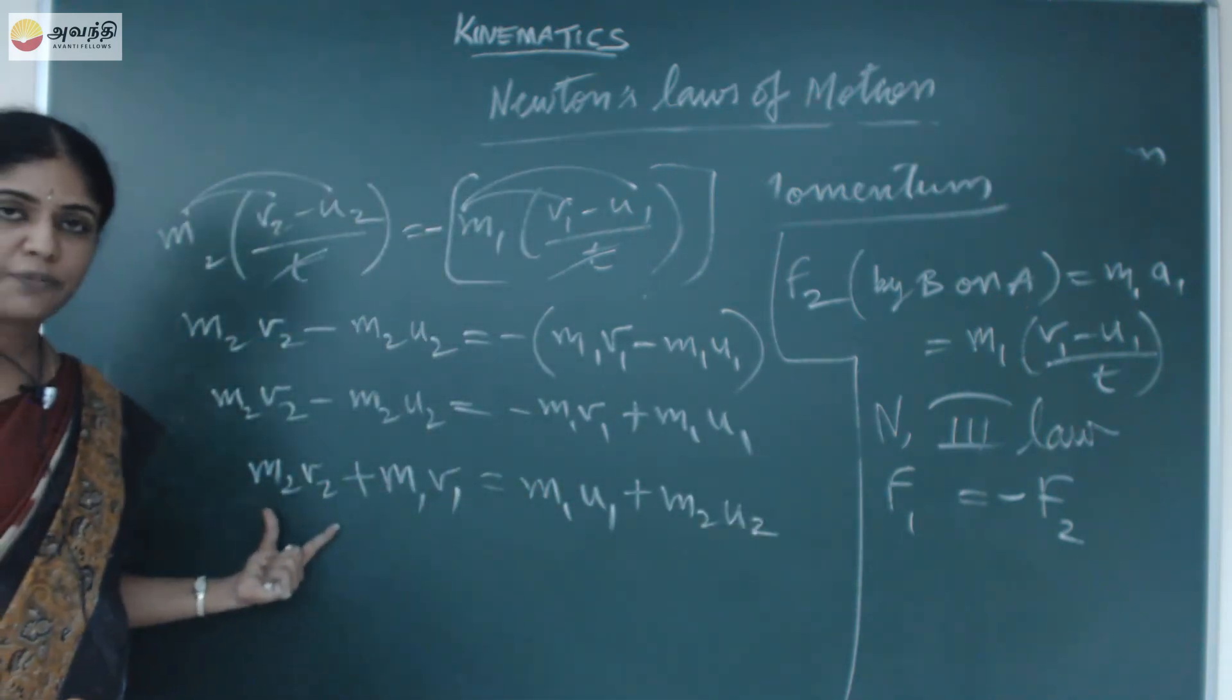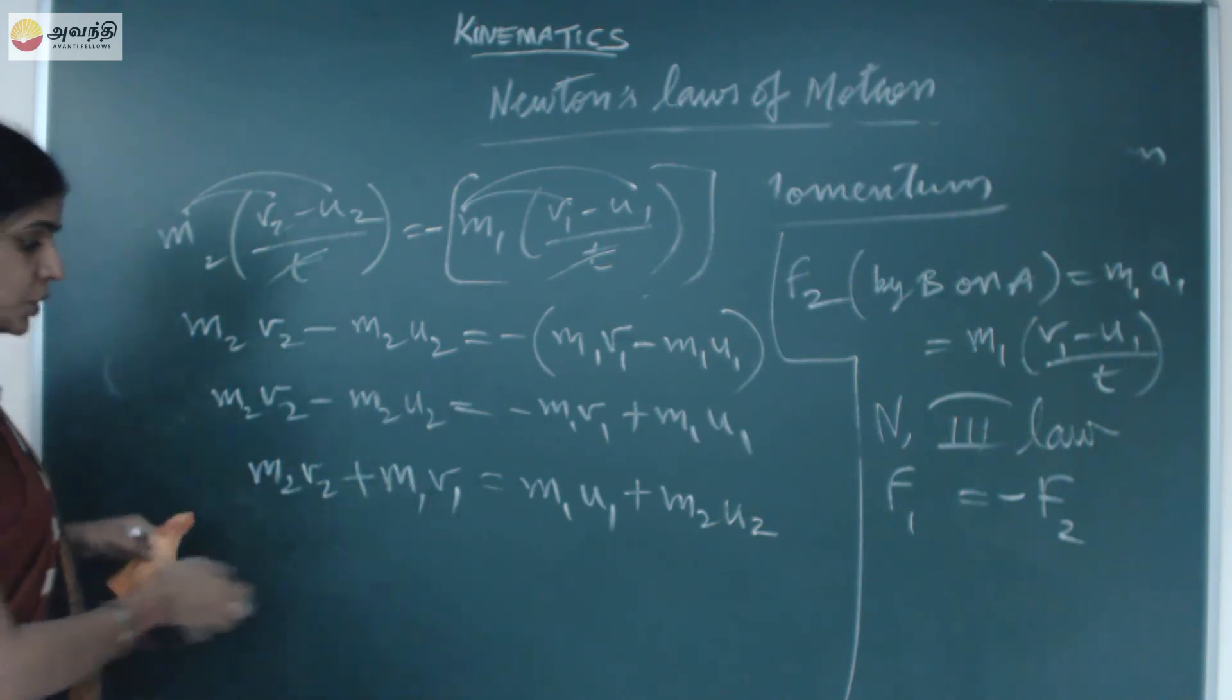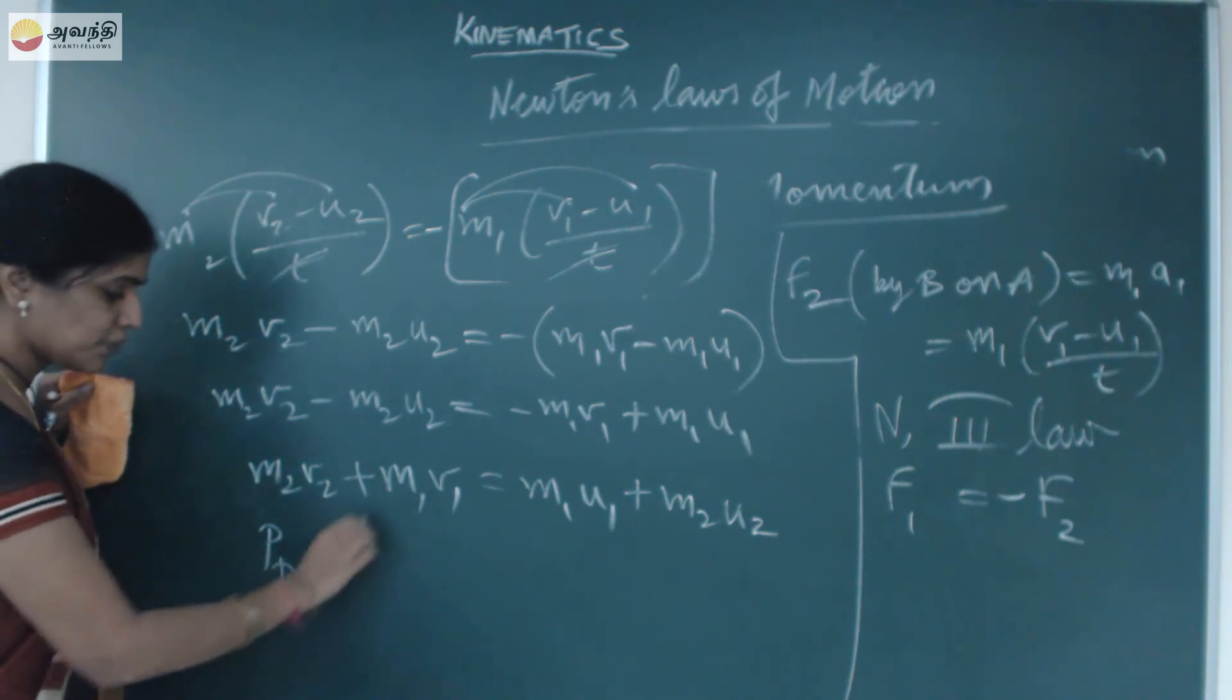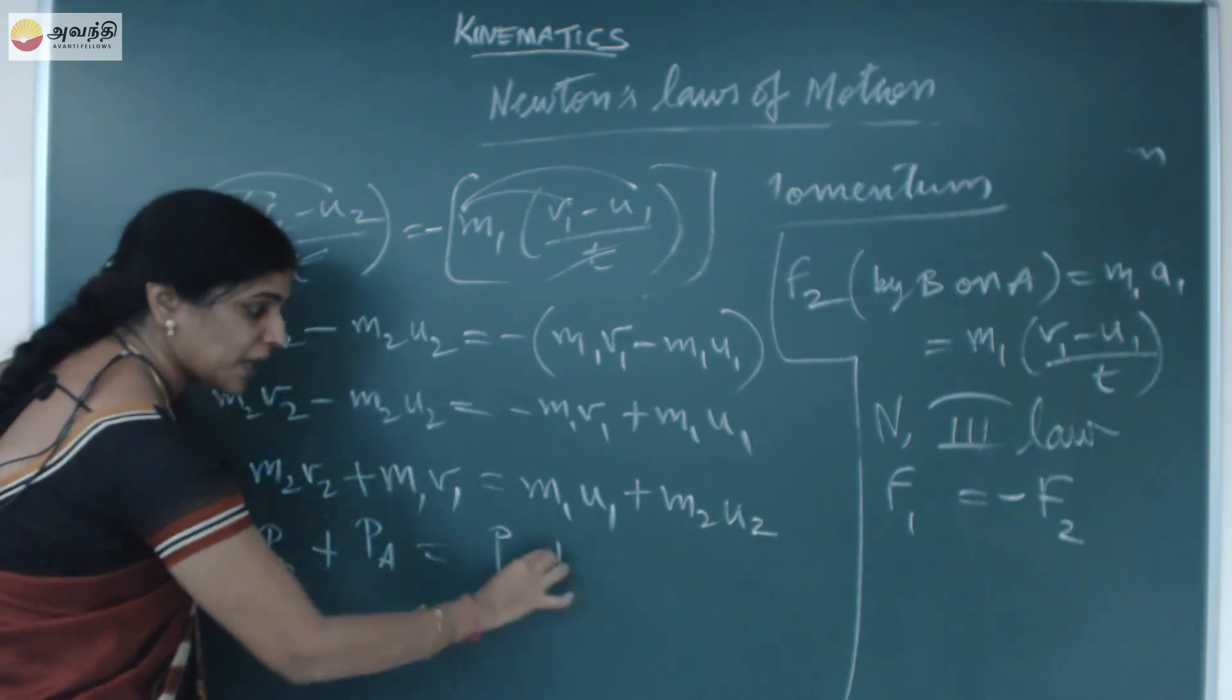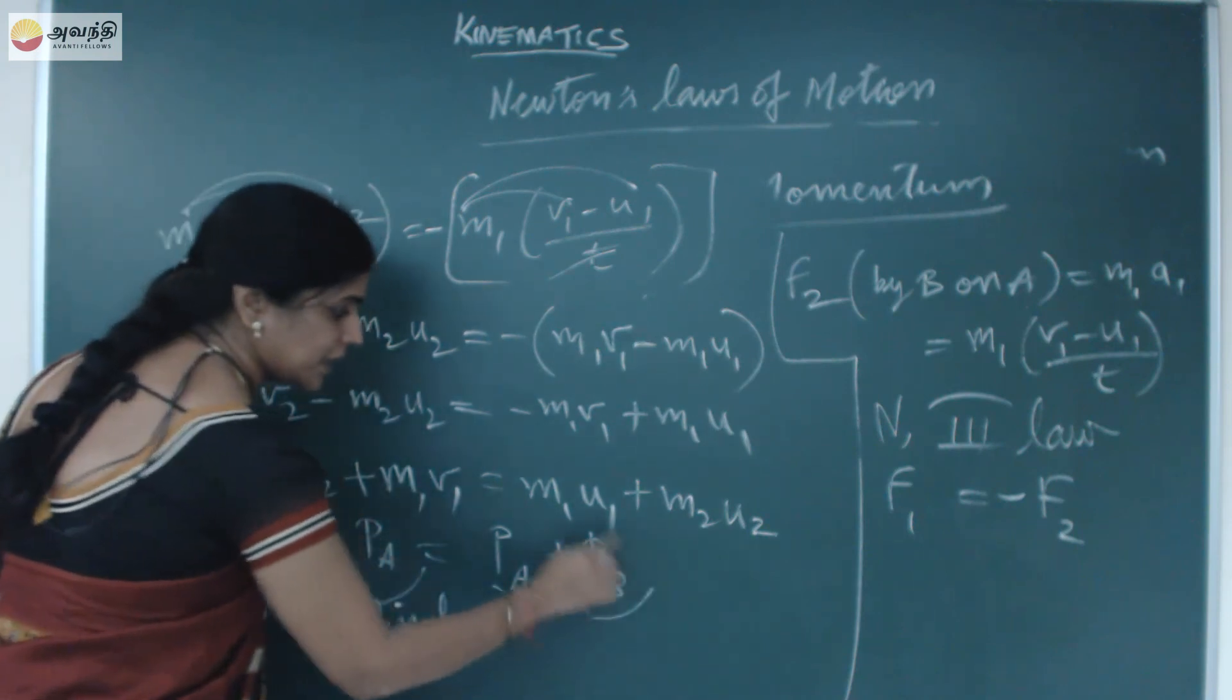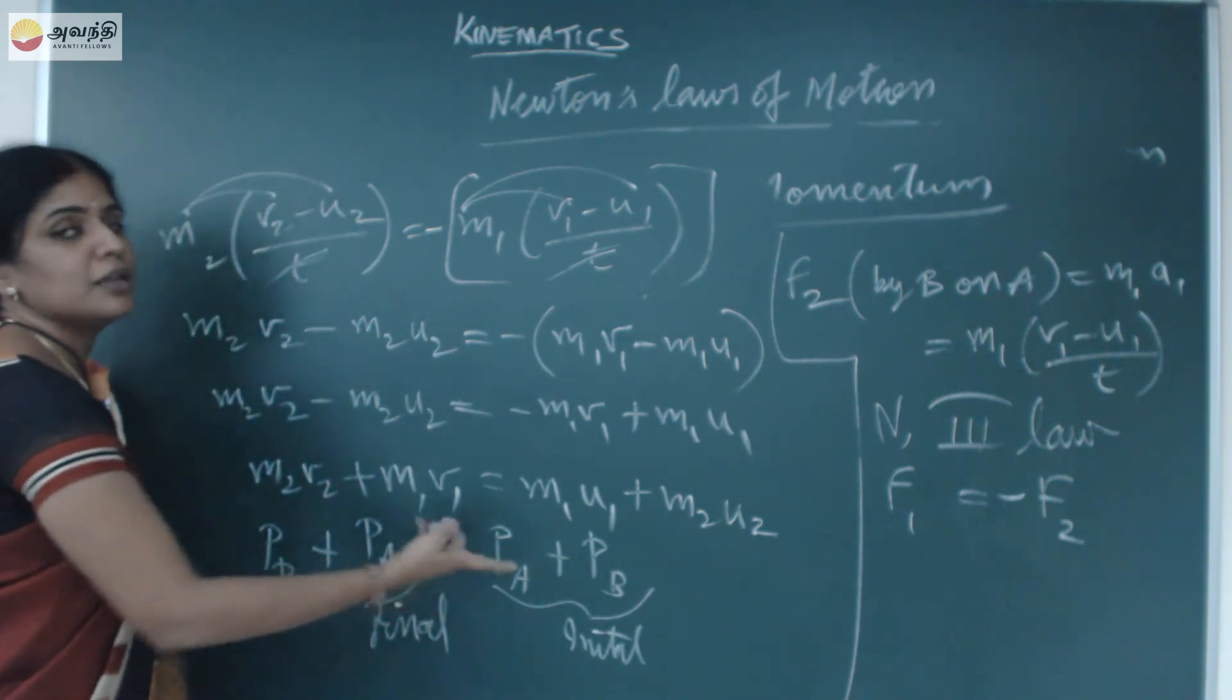Now here we know that momentum is product of mass into velocity. This is the final velocity. v1 is the final velocity. So I can write this as momentum of the objects. Final momentum of B plus momentum of object A equals momentum of object A plus momentum of object B. And now this is all for final momentum. Final velocities are v1, v2. This is u1, u2, the initial velocities. So initial momentum. Now I can say the total final momentum equals total initial momentum.